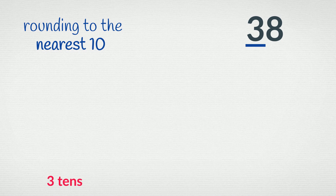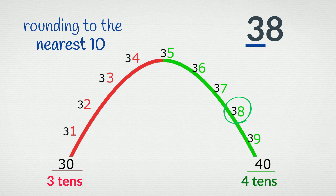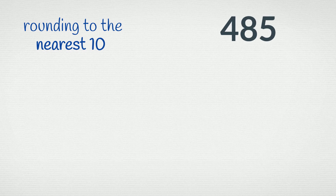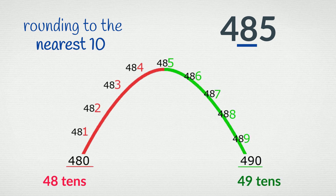Let's try another. 38 rounded to the nearest 10. 38 is between 3 tens and 4 tens. We can see that 38 is nearer to 4 tens, so 38 rounds up to 40. Now let's try a larger number, 485. We'll still round it to the nearest 10. To do this, we find the tens. This number is between 48 tens and 49 tens — in other words, 480 and 490. Because of the 5 ones, this number rounds up to 49 tens, in other words, 490.